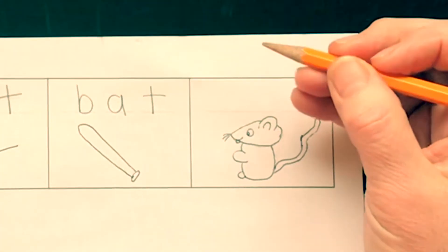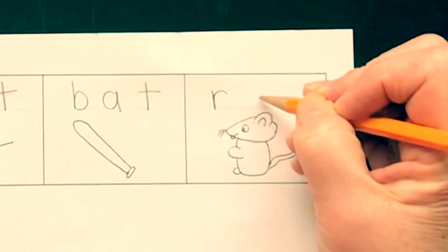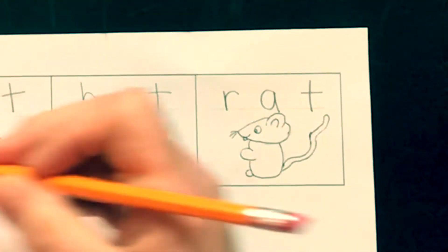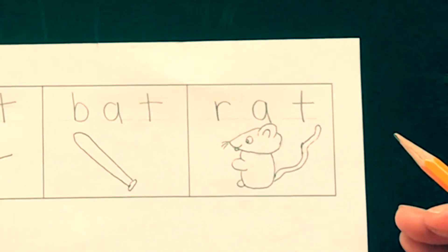What can we make? How do we make rat? Say those sounds with me. Rat. Rat. Now those are the four pictures we'll make together.